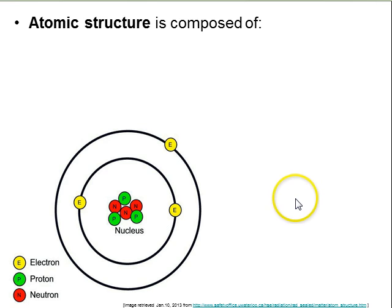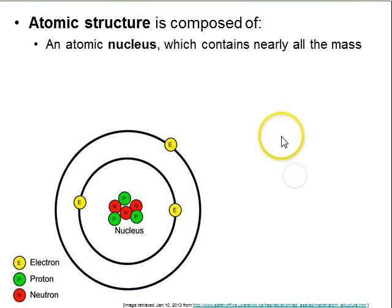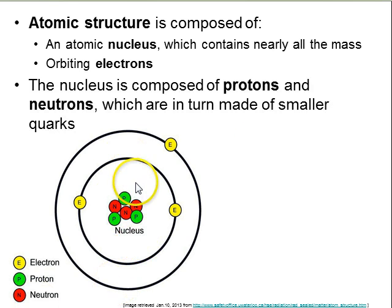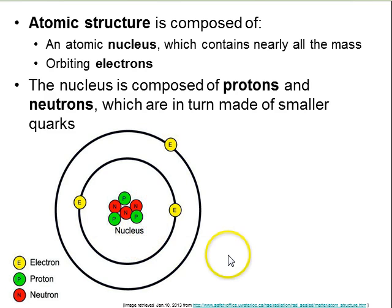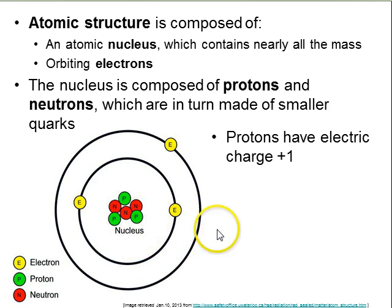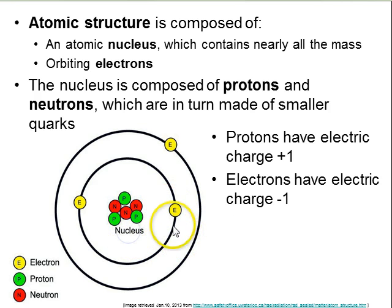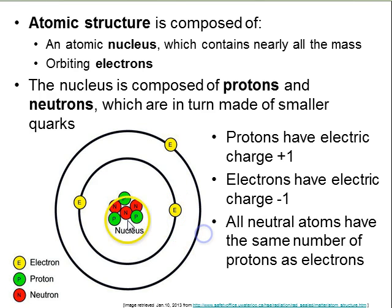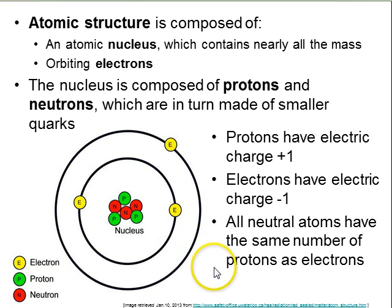Atoms have some internal structure. They're made of a nucleus and some orbiting electrons, and the nucleus in turn is made of protons and neutrons, and the protons and neutrons are even made of quarks. In terms of electric charge, protons have plus one and electrons have negative one. So if an atom has the same number of protons as electrons, then it's electrically neutral.